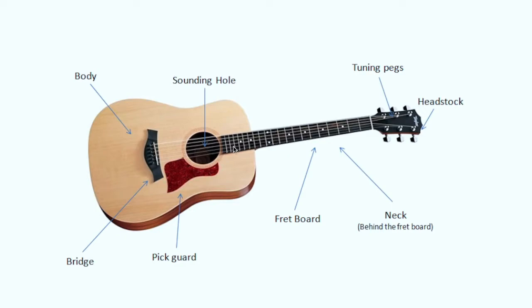In acoustic guitars, you will usually find 18 to 21 or 22 frets maximum. Now, the third part of the guitar is known as the body. The body of the guitar has many different structures depending on the sound quality or depth of sound you want, but this is a general example.